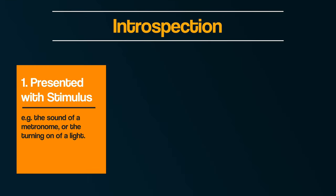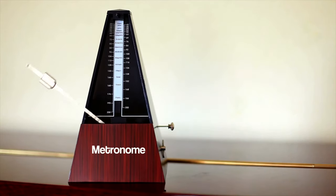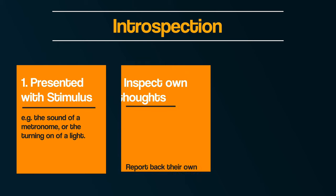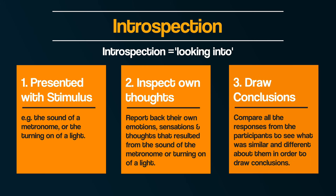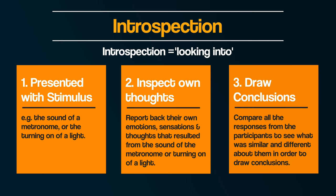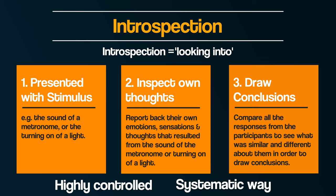So how would it work? Firstly, participants would be presented with a stimulus — for example, the sound of a metronome or the turning on of a light. Then secondly, the participants would inspect their own thoughts. The word introspection means "looking into," and they would report back their own emotions, sensations, and thoughts that resulted from the stimulus. Thirdly, conclusions: Wundt would compare all the responses from participants to see what was similar and different in order to draw conclusions about the mind.